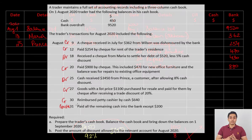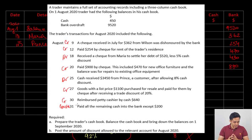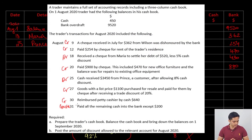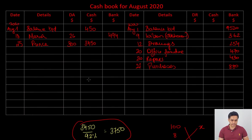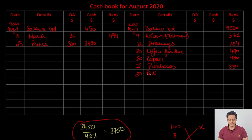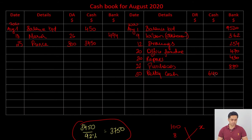August 30: reimbursed the petty cashier by cash, 640. The journal entry is petty cash debit, cash credit. So on the credit side of the cashbook: details — petty cash, 640 in the cash column.